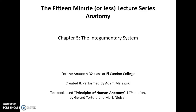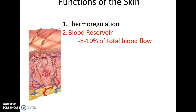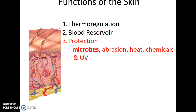This is part of the 15-minute-or-less lecture series on human anatomy, chapter five: the integumentary system. The functions of the skin — the main organ of the integumentary system — include thermal regulation through sweating and adjusting blood flow to the skin, serving as a blood reservoir (about eight to ten percent of total blood is found in the dermis), and protection by providing a barrier that prevents microbes from entering, guards against minor abrasions, prevents underlying tissue injury from heat or chemicals, and provides some UV protection through pigment.